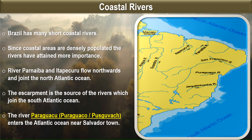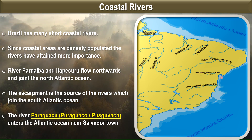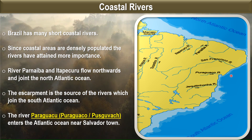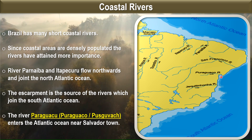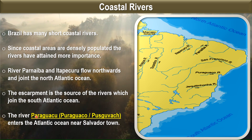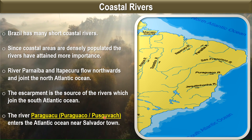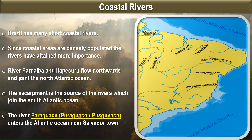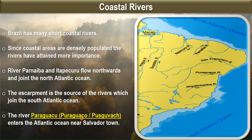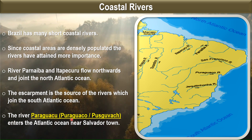The river Paraguaçu enters the Atlantic Ocean near Salvador town. Note that the textbook gives two spellings: 'Puraguaco' in the map and 'Puscovac' in the text. In your exam, write either of these two spellings — not the actual Portuguese spelling — and you will get it right.